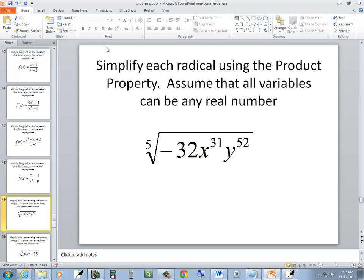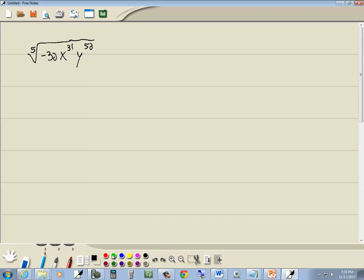Simplify each radical using the product property. Assume all variables can be any real number. To begin with, our index is odd, and we've got a negative number inside. So the negative can automatically come out in front, so we don't have to worry about that at all.